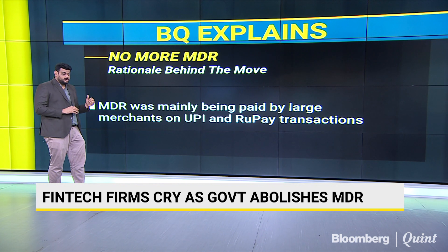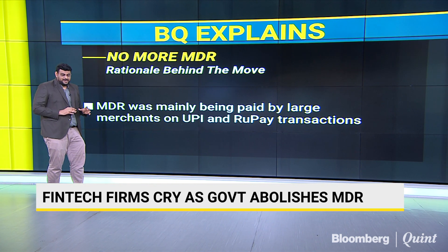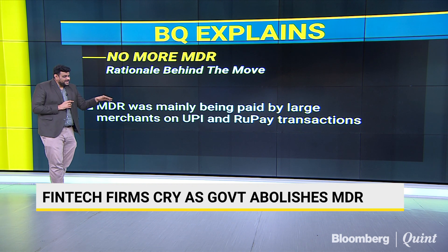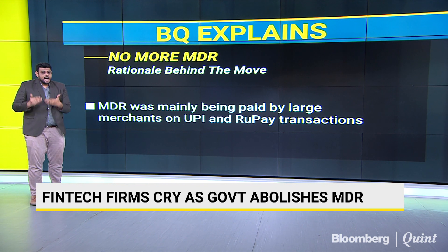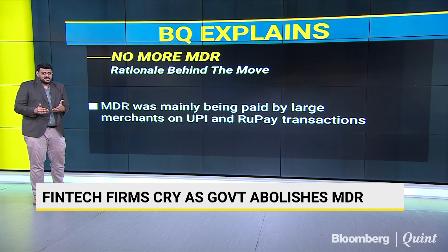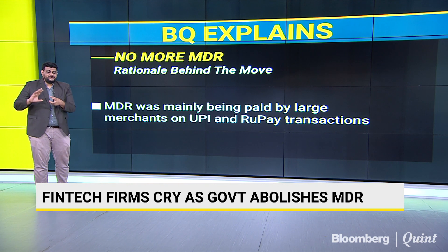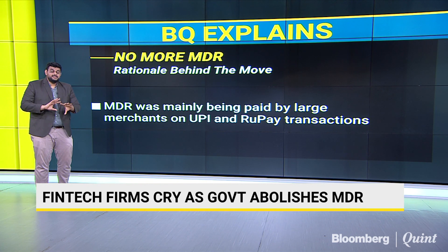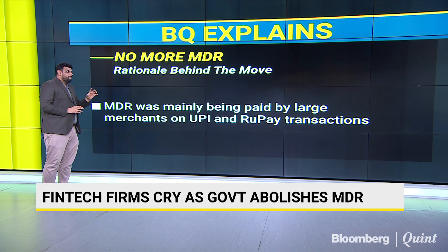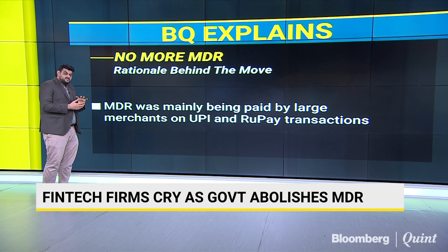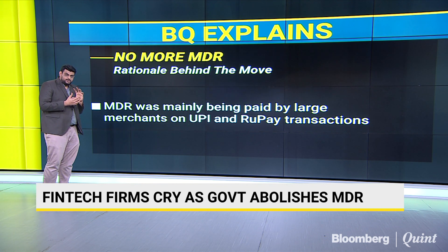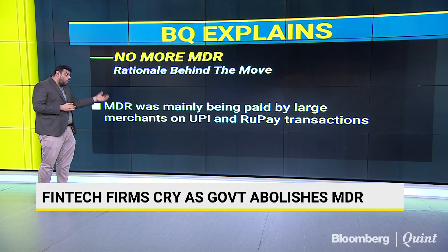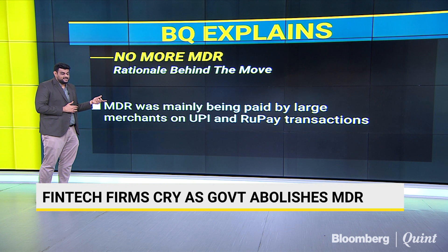These two clarifications the NPCI had provided meant that the MDR was mainly being paid by the larger merchants in the system — they were the ones driving the entire MDR and ensuring that everybody in the ecosystem got paid. But the government's removal of MDR from UPI and RuPay transactions will benefit all merchants, smaller as well as larger ones.